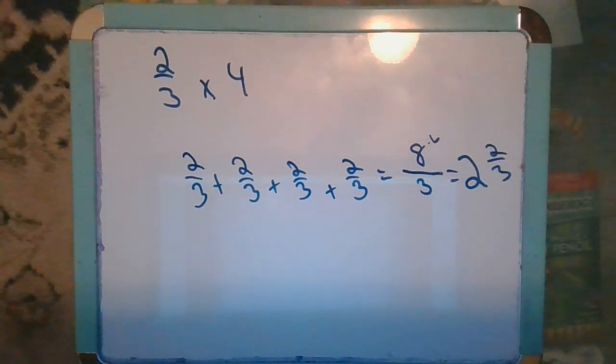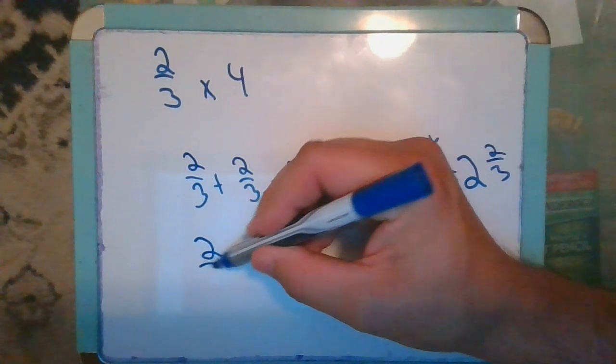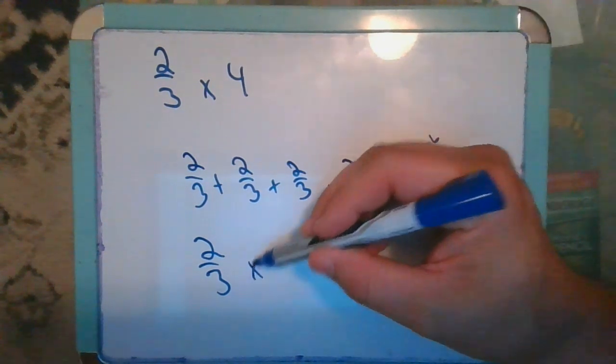That's one way we could do this problem. Now, the other thing we could take a look at is doing it straight from an algorithm. We worked on this previously, and some of us forget. So when we take a look, two-thirds times four.